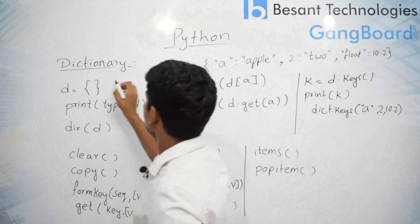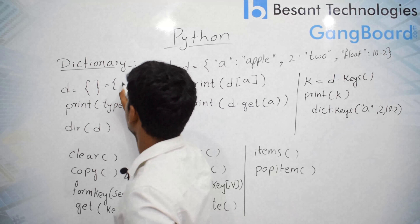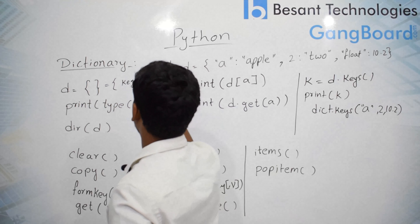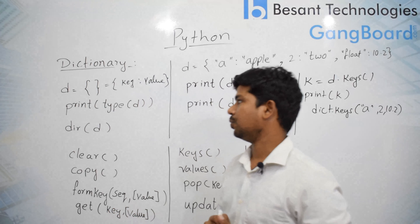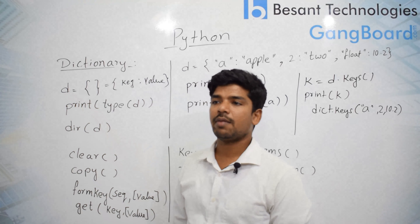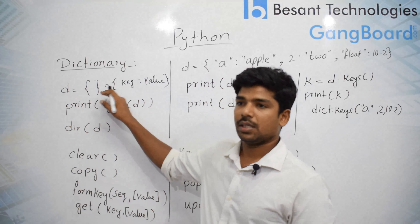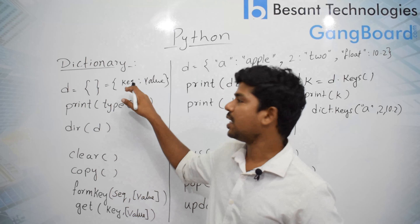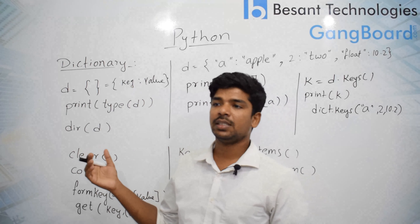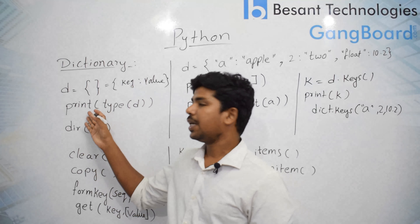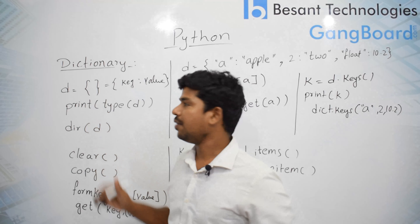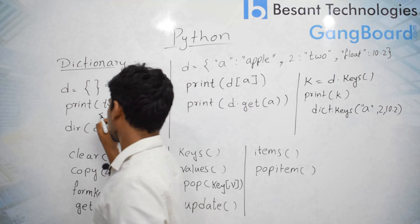It is a pair of key and value. For creating an empty dictionary, you can use D equals to curly braces. When you use curly braces, the dictionary will be created. In order to check whether an object is a dictionary type or not, you use print of type of D.